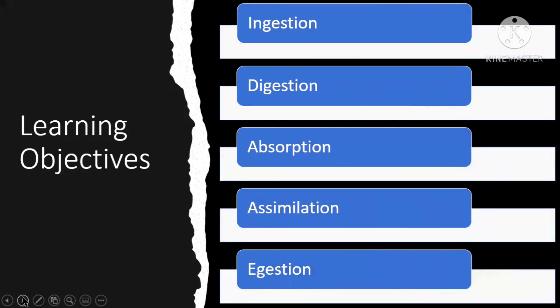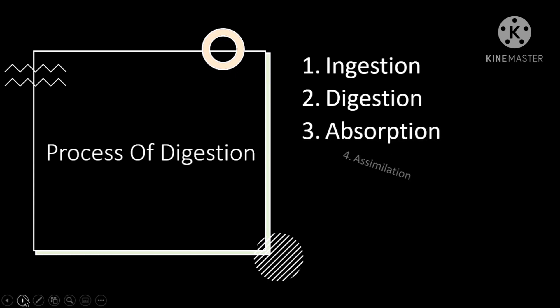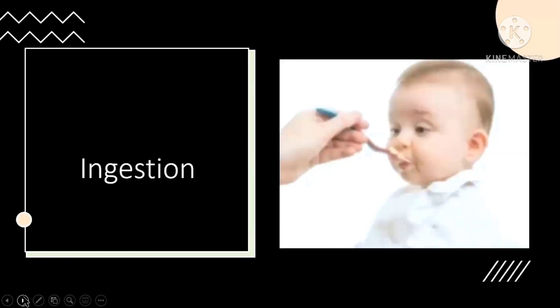This video will be short but very knowledgeable because this is the main part of the chapter — the process of digestion. So don't skip this video. The learning objectives for today are: ingestion, digestion, absorption, assimilation, and egestion. The process of digestion follows these steps in order: first ingestion, then digestion, then absorption, then assimilation, and finally egestion.